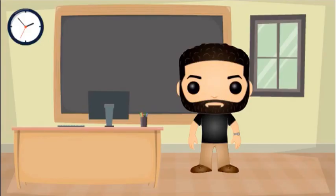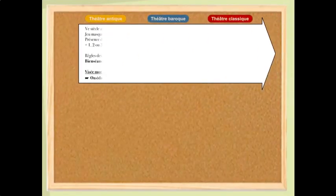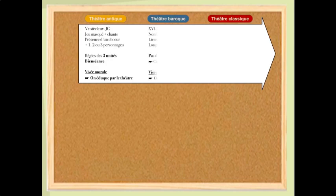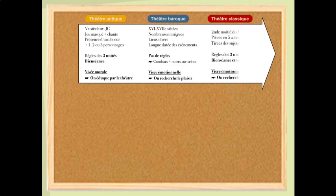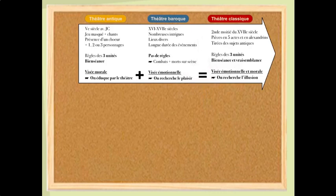Faisons un rapide récapitulatif de tout ce que nous avons vu. Premièrement, le théâtre antique avec son jeu masqué, ses chants, ses règles et bien sûr sa visée morale. Ensuite, le théâtre baroque avec ses intrigues dignes d'un roman d'aventure, son absence de règles et bien sûr sa recherche du plaisir. Et enfin, le théâtre classique qui est, en quelque sorte, une hybridation, un produit du théâtre antique et du théâtre baroque. Un subtil mélange entre règles strictes et plaisir des sens par le divertissement.